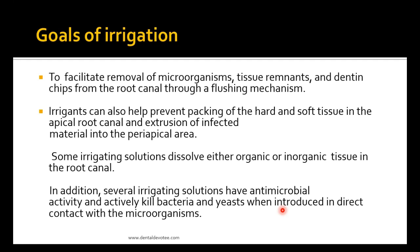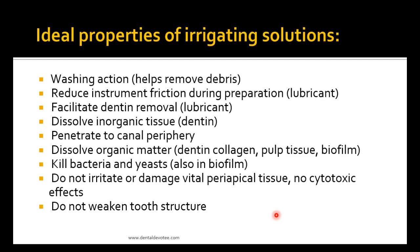Goals of irrigation: to facilitate removal of microorganisms, tissue remnants, and dentine chips from the root canal through a flossing mechanism. Irrigants can also help prevent packing of hardened tissue in the apical root canal and extrusion of infected material into the periapical area. Some irrigating solutions dissolve either organic or inorganic tissue in the root canal, and several have antimicrobial activity, actively killing bacteria and yeast when introduced in direct contact with the microorganisms.